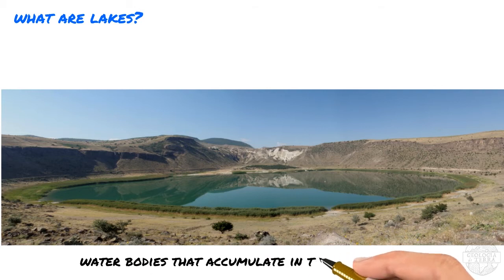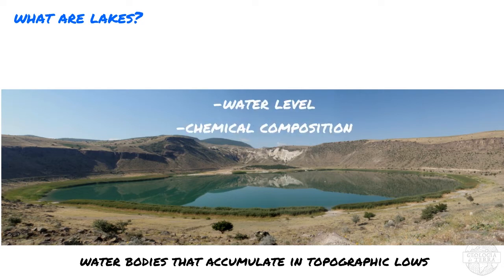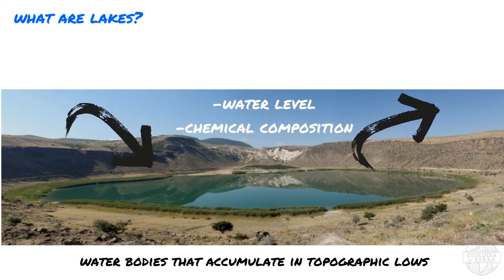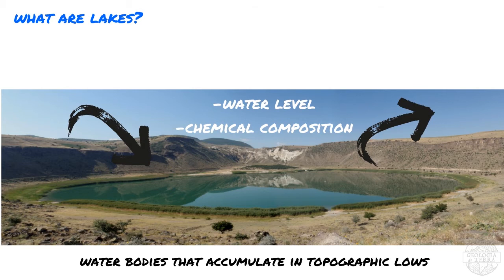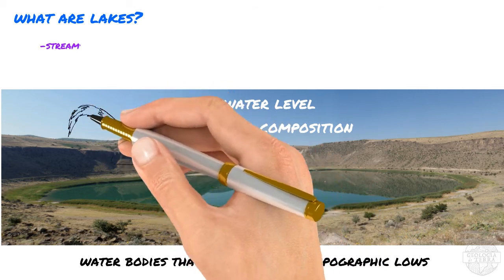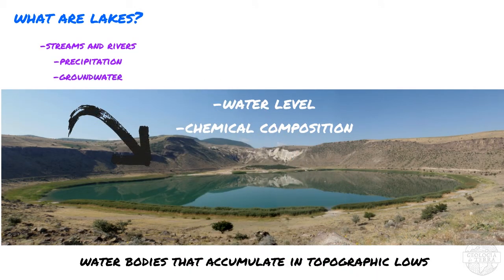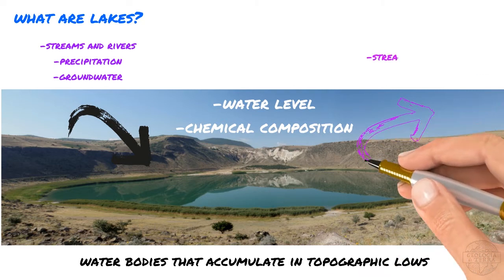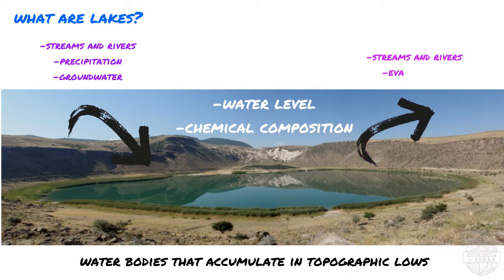So what are lakes? Lakes are inland bodies of water that form when water accumulates and is retained in a topographic low on the land surface. The water level and chemistry is controlled by inflow and outflow of water. The inflow comes from streams that supply water and sediment from the surrounding region into the lake, from precipitation, and in a few cases from groundwater. The outflow occurs when lakes lose water by flow out into a river and/or by evaporation from the surface.